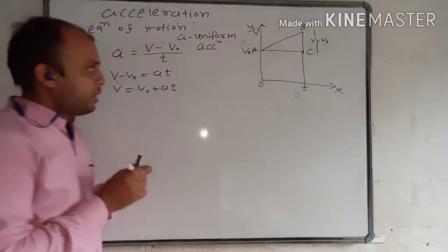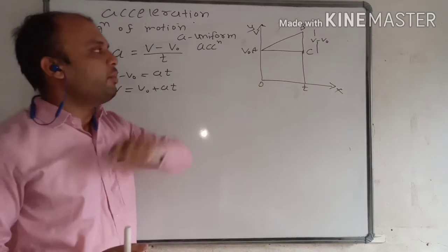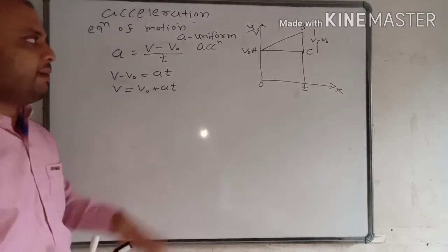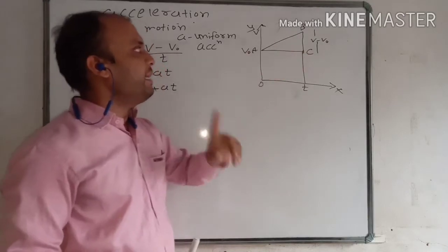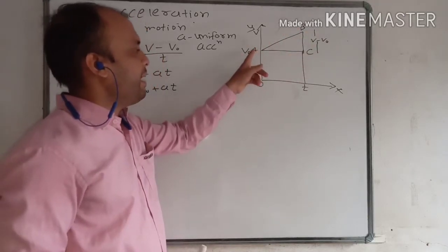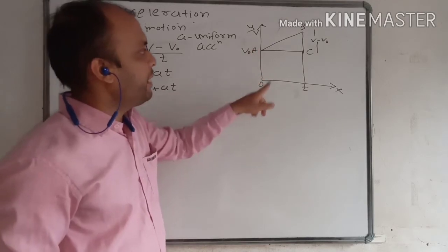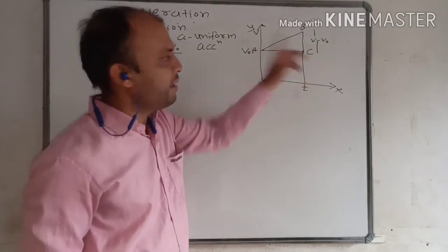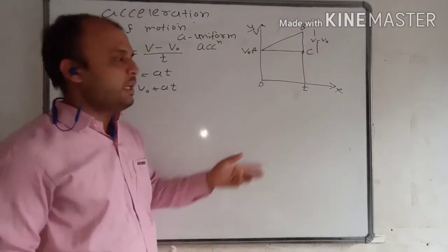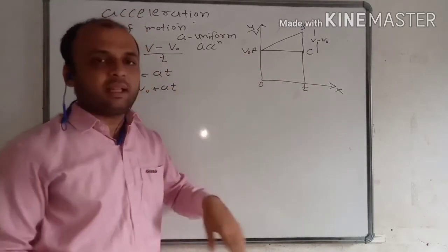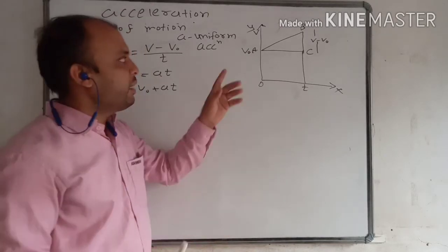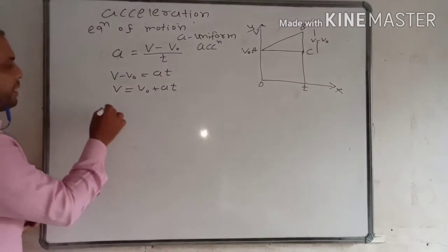Now consider this graph. From this graph, if we find the area, we find the area of triangle ABC and rectangular AODC. The area of a velocity-time graph gives displacement.